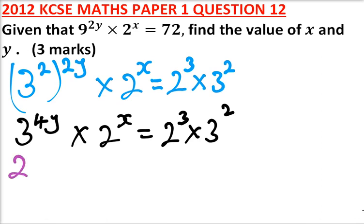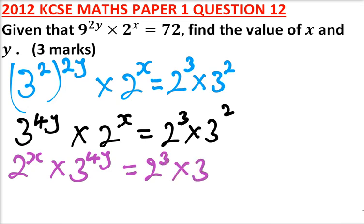We can rewrite it like this, so we can start with 2 to the power x multiplied by 3 to the power 4y is equal to 2 to the power 3 multiplied by 3 to the power 2.